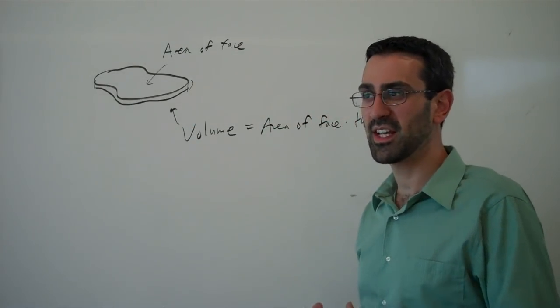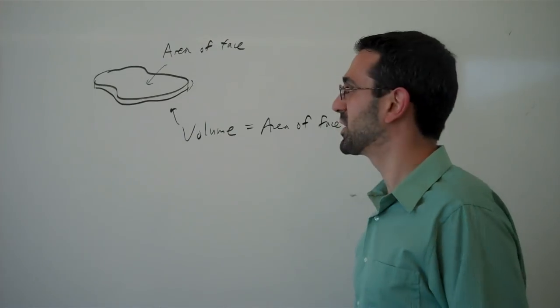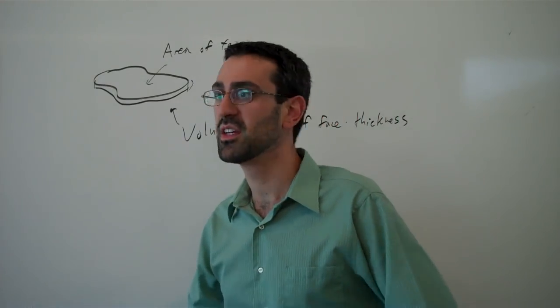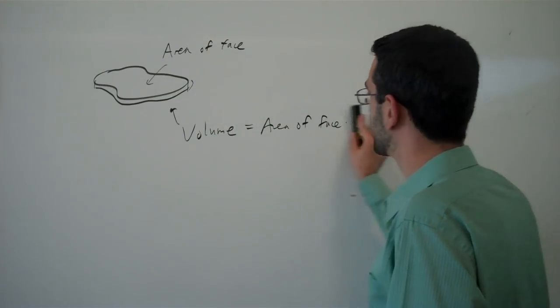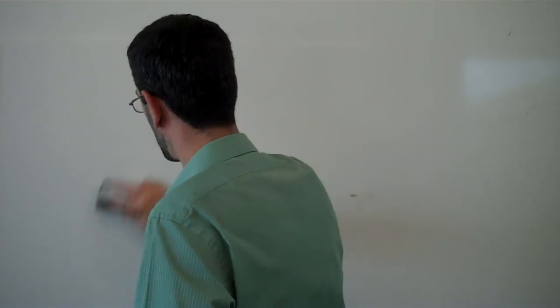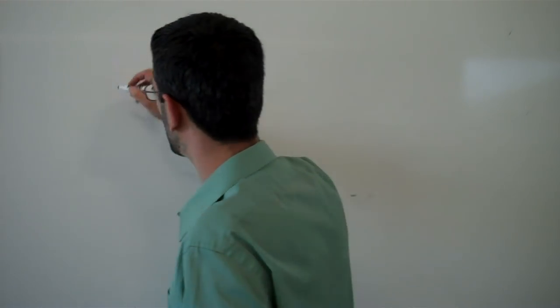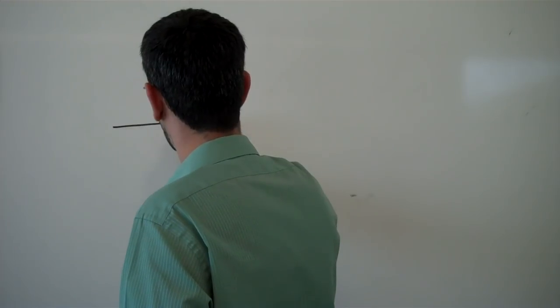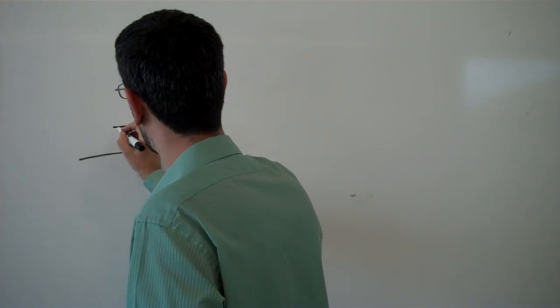And so kind of like how we slice up areas, we are going to slice up volumes into nice little pieces. So for a good start, let's look at a fairly simple shape. Let's look at a square pyramid.